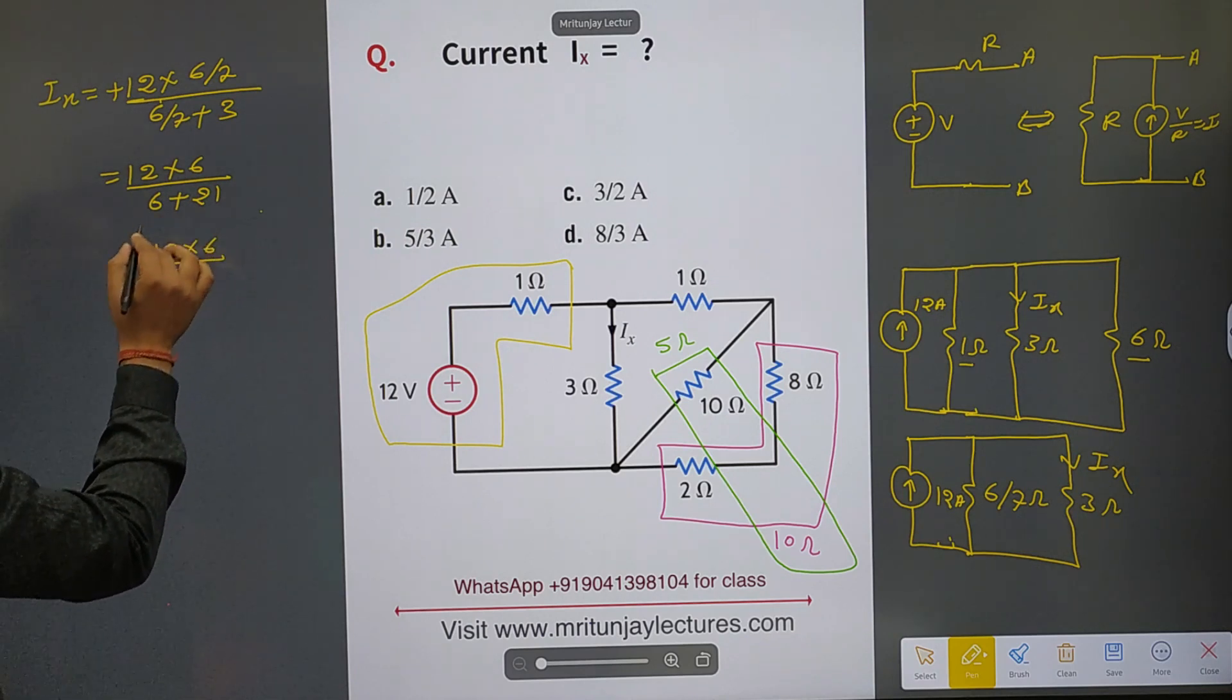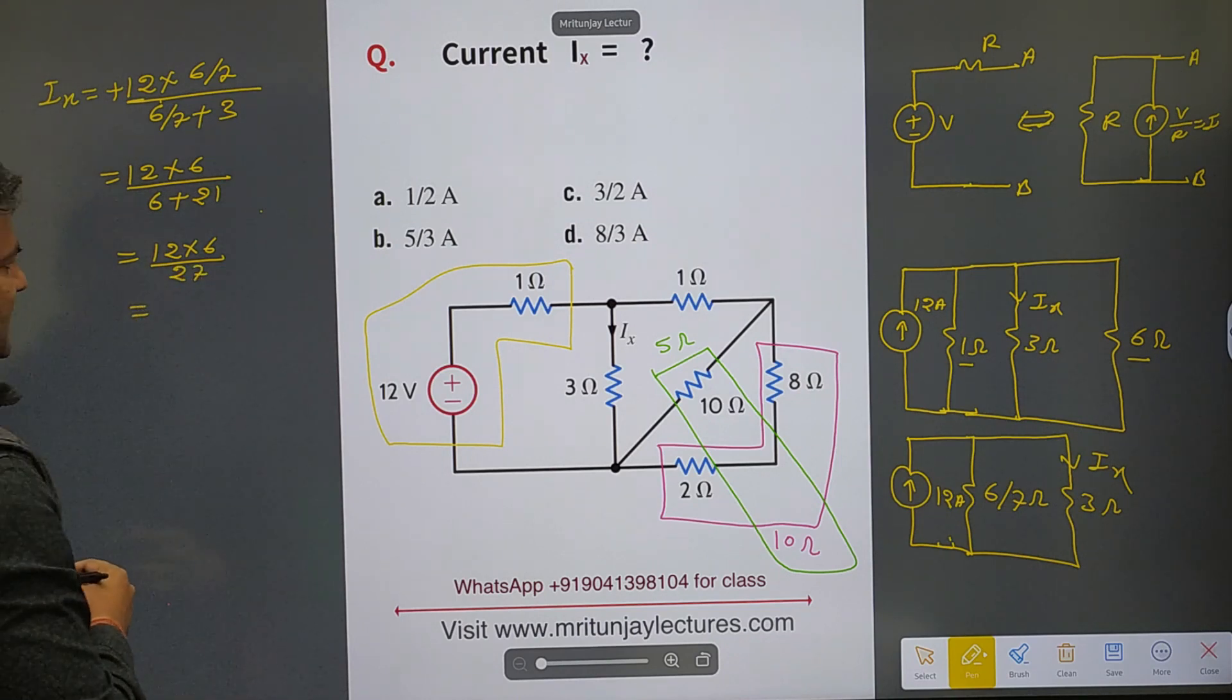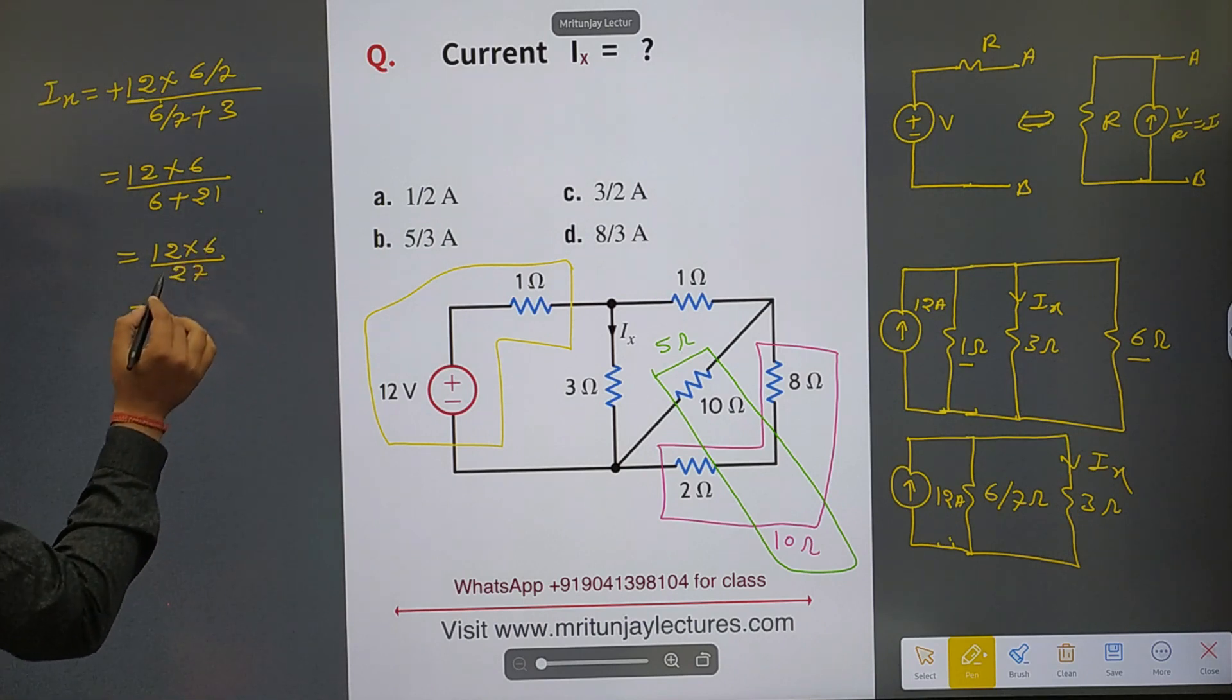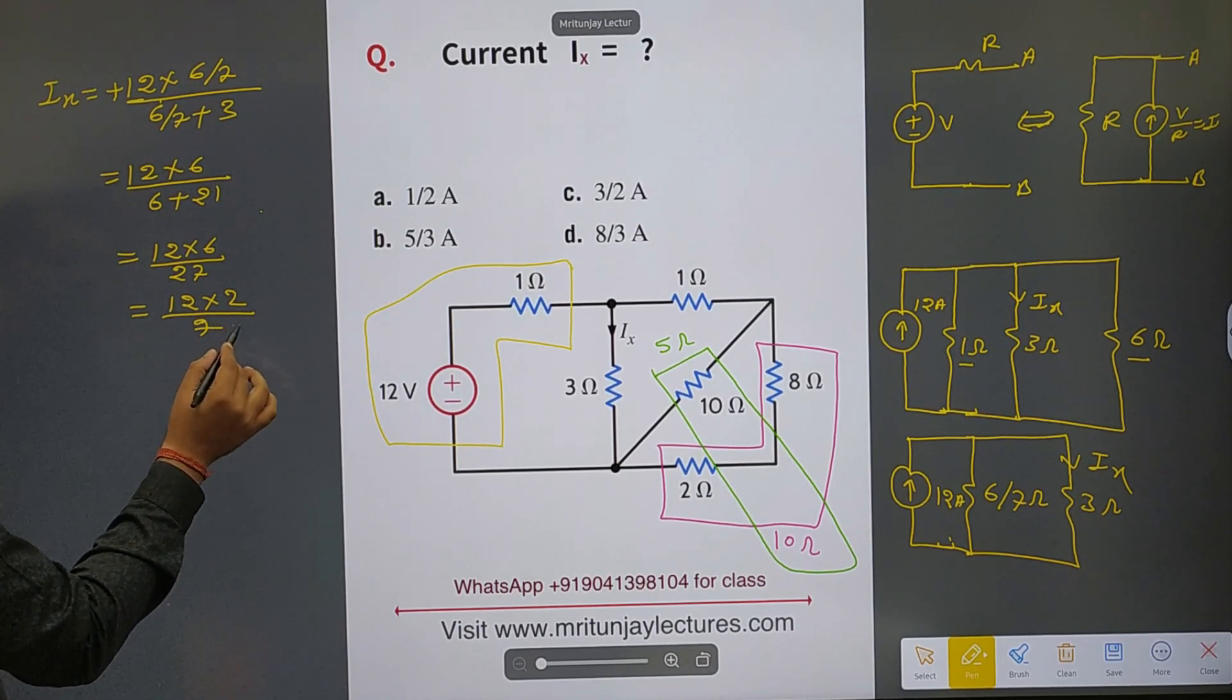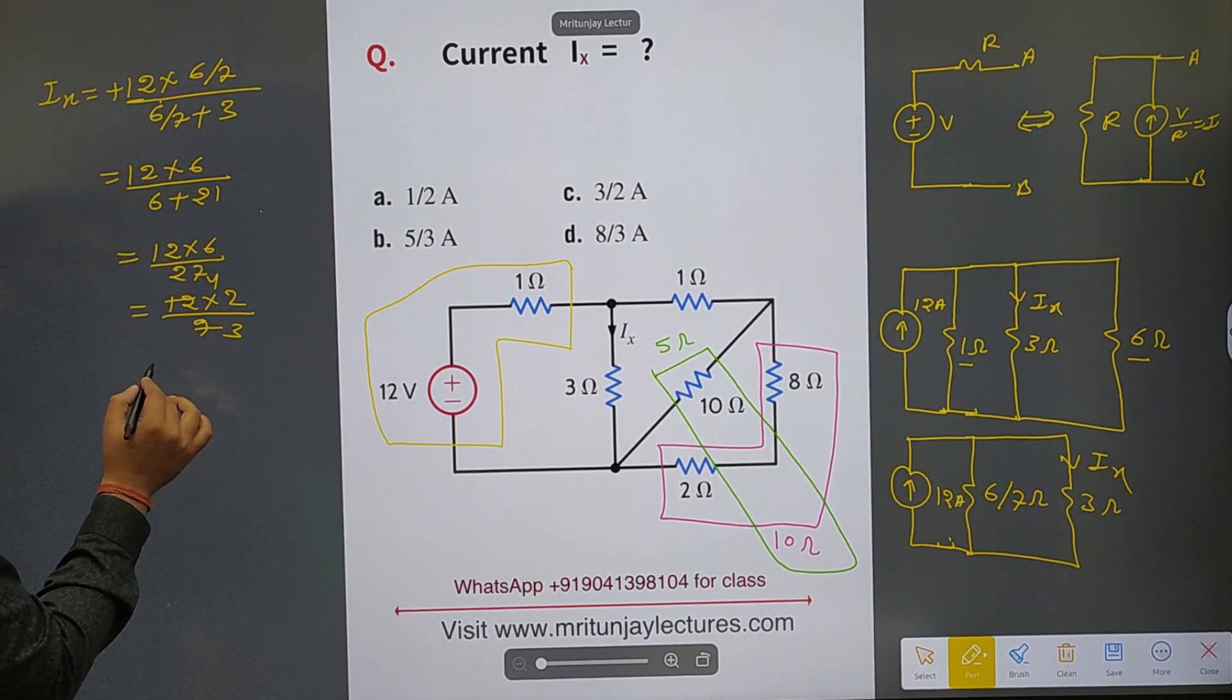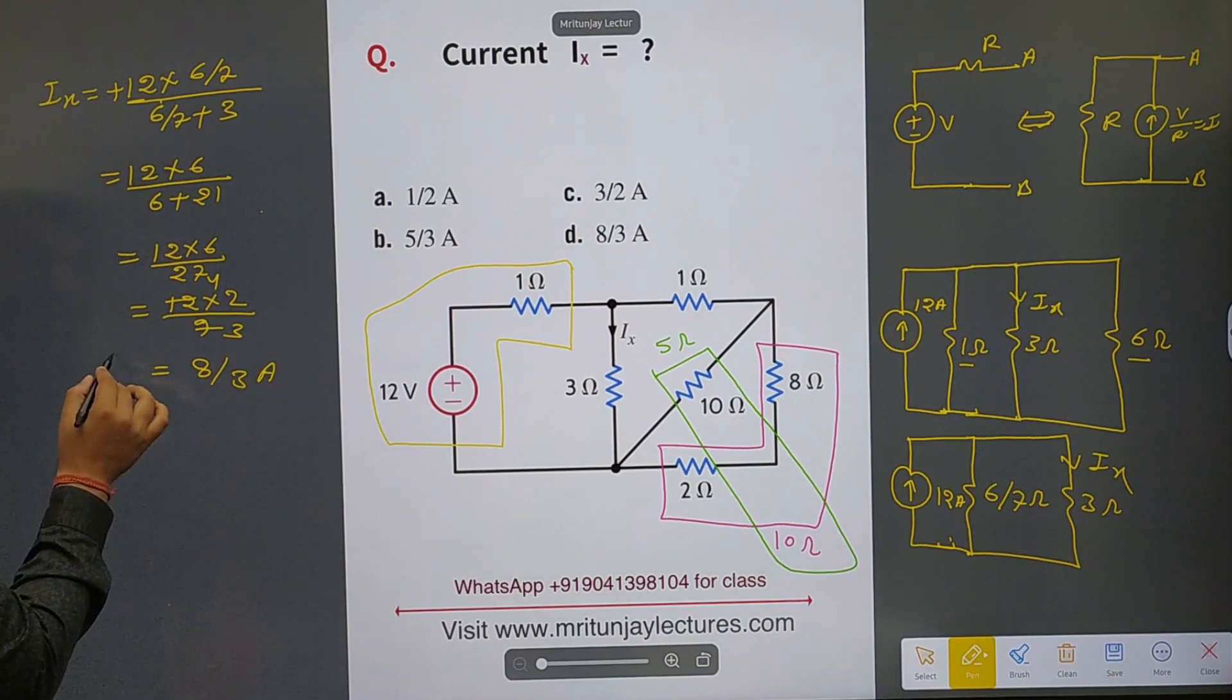That is 27. After that, if divided by 3, 3 to just 6, 9. So 9, so 3 pija and 3 forja, so 8 by 3 ampere is the right answer.